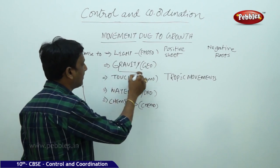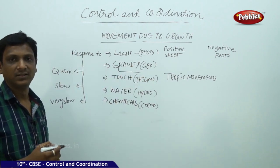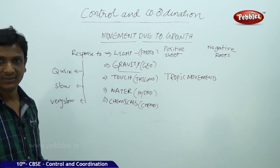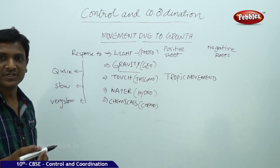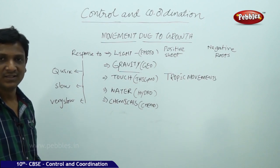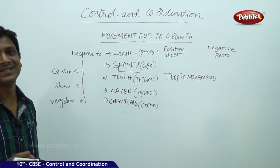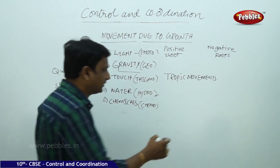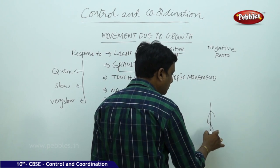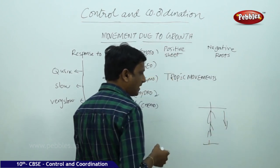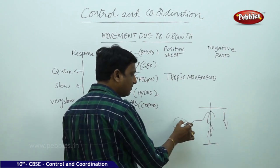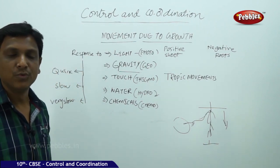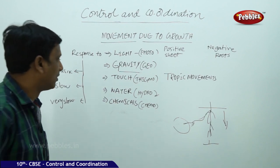The second tropic movement is in response to gravity — this is geotropism. Roots always grow towards the earth, downward. The shoot grows away from the earth, showing negative geotropism. Roots show positive geotropism, moving towards the earth. Additionally, roots grow towards water sources — this movement of roots through the ground in search of water is called hydrotropism.